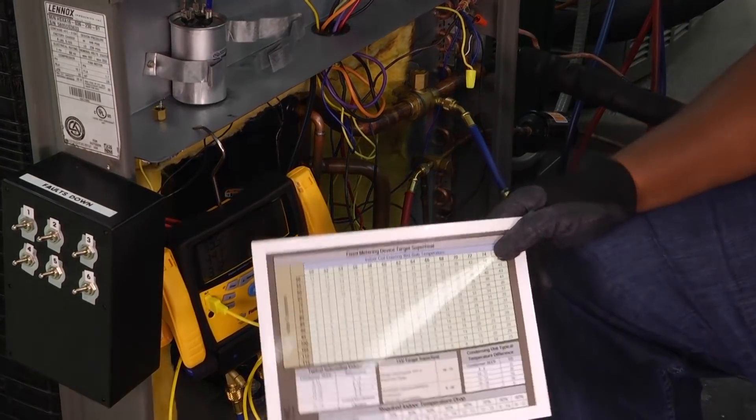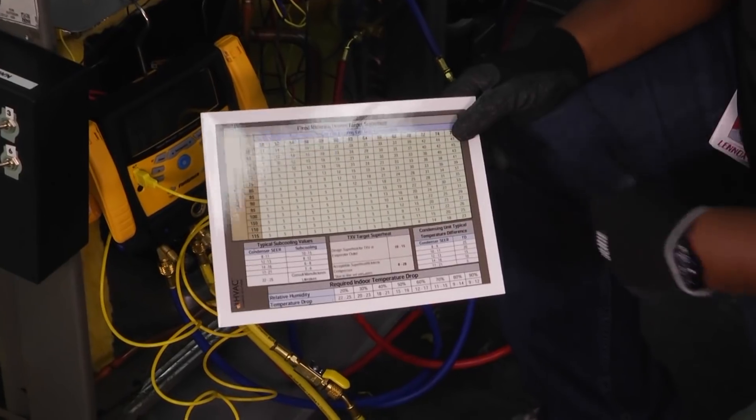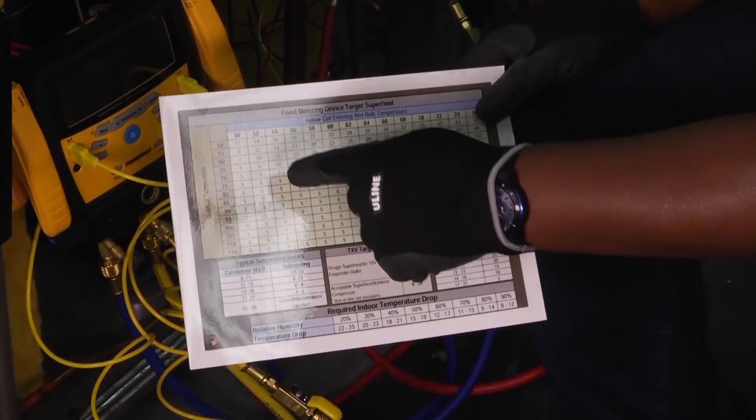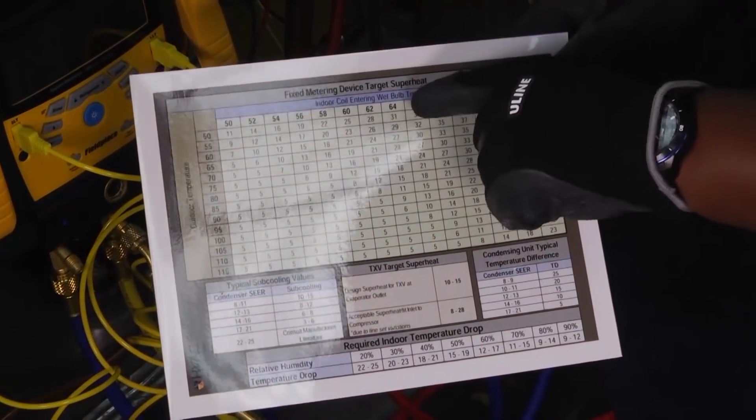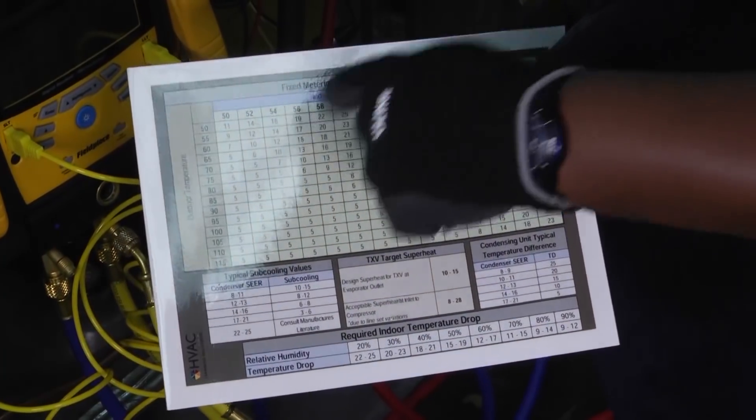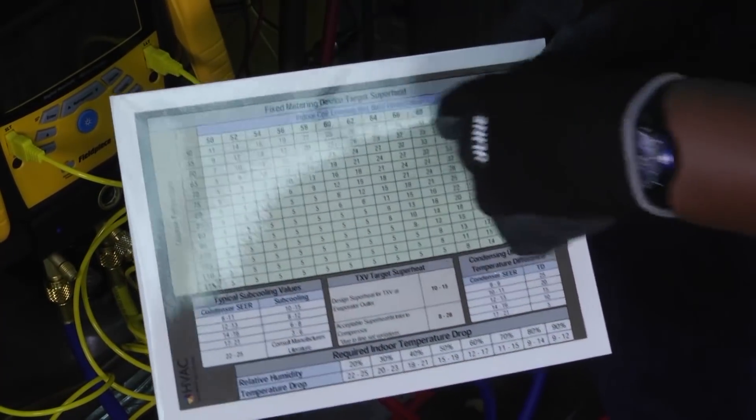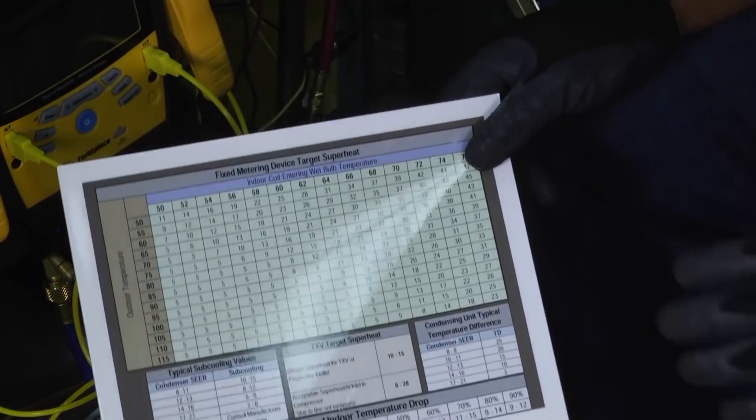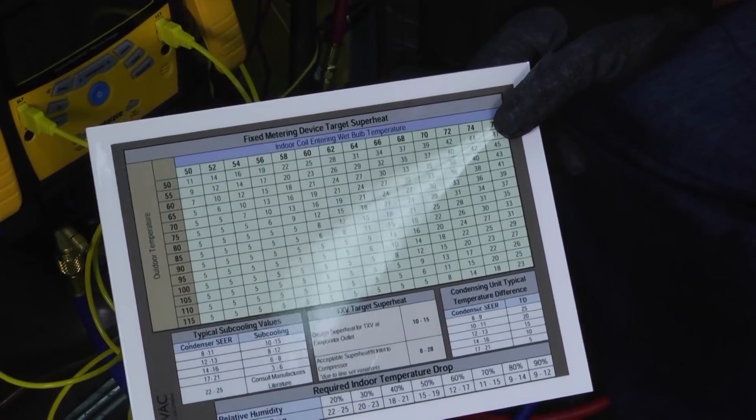Also, some companies you may work for have a chart similar to this where you have your outdoor temperature, your indoor coil wet bulb temperature, and based on those numbers, you can plot and figure out exactly what your superheat number should be.